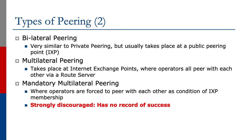Multilateral peering takes place at internet exchange points where operators all peer with each other via a device called a route server. Mandatory multilateral peering is where operators are forced to peer with each other as a condition of their exchange point membership.